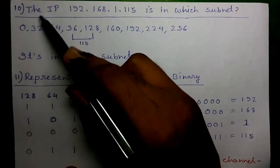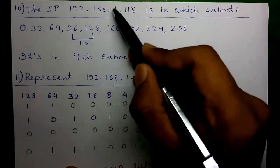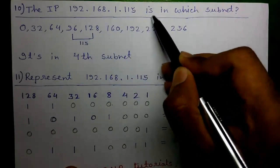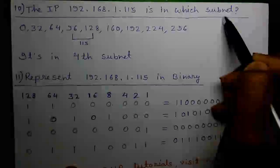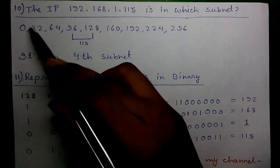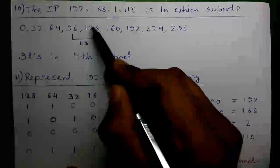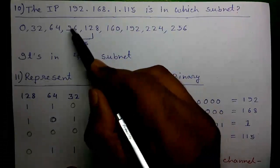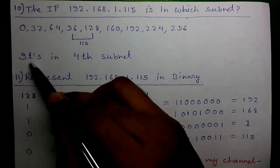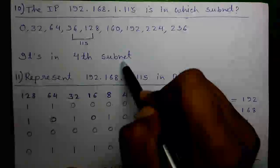Tenth calculation: which subnet is IP 192.168.1.115 in? As you can see, the subnets are the first, second, third, and fourth. Our IP falls in the fourth subnet.